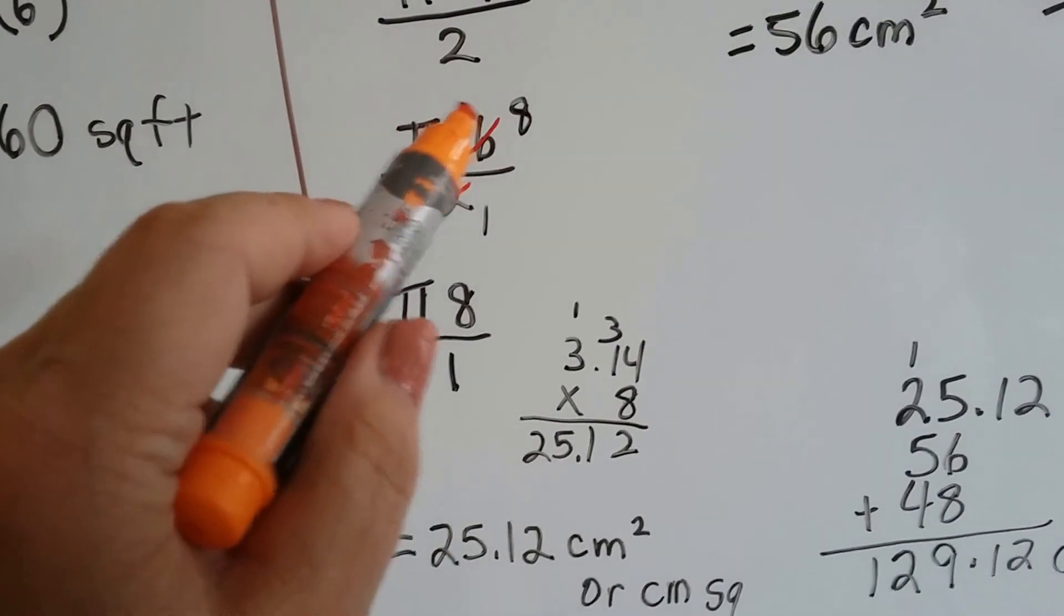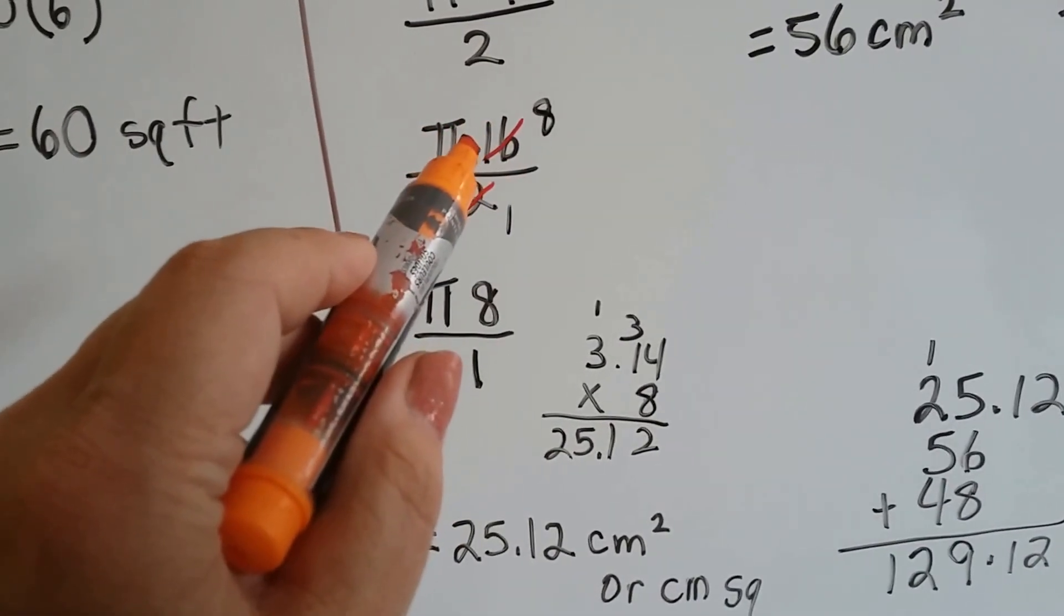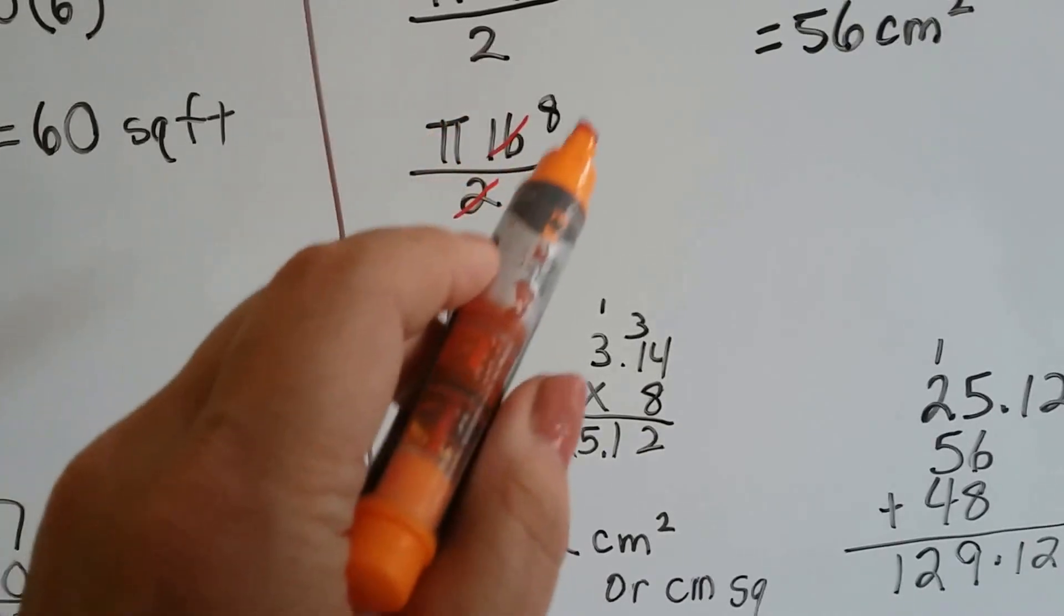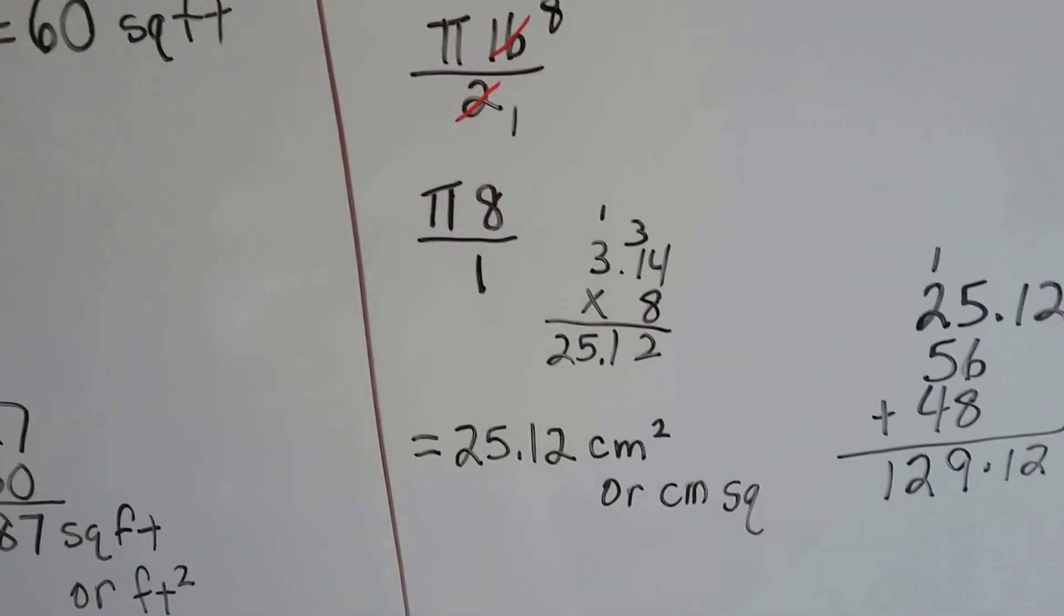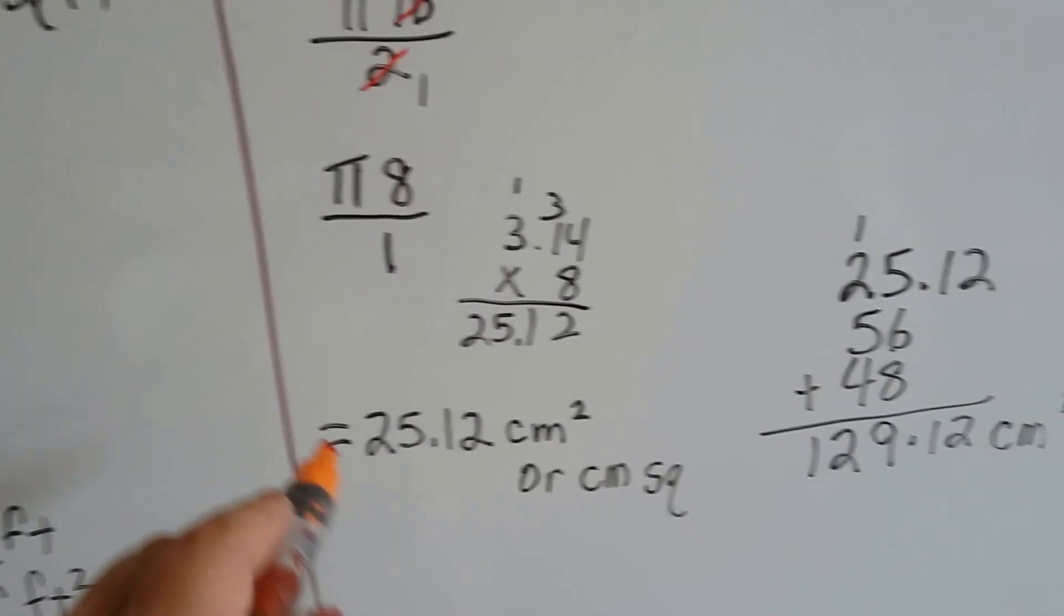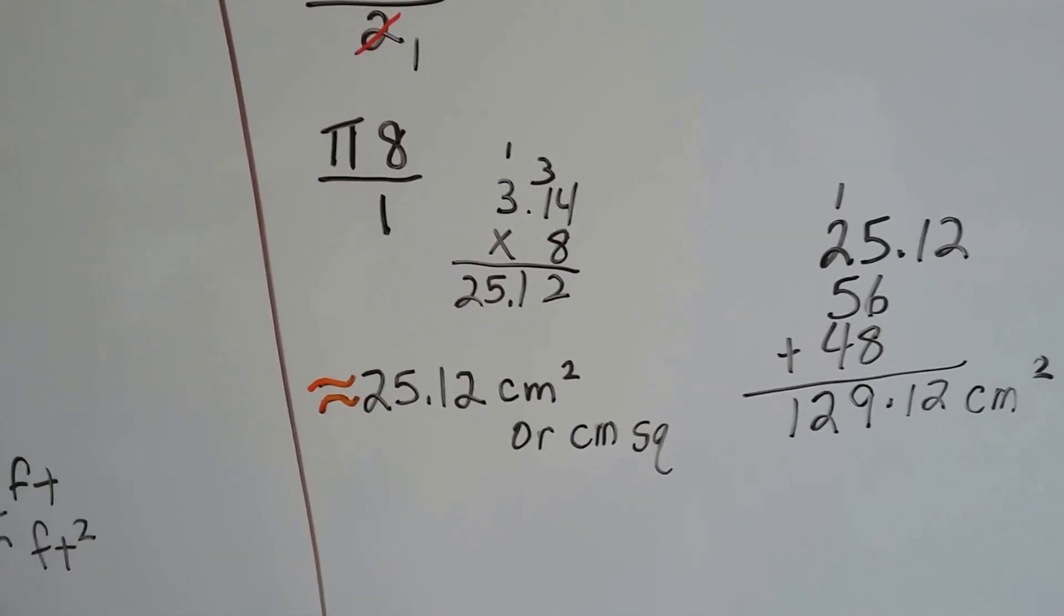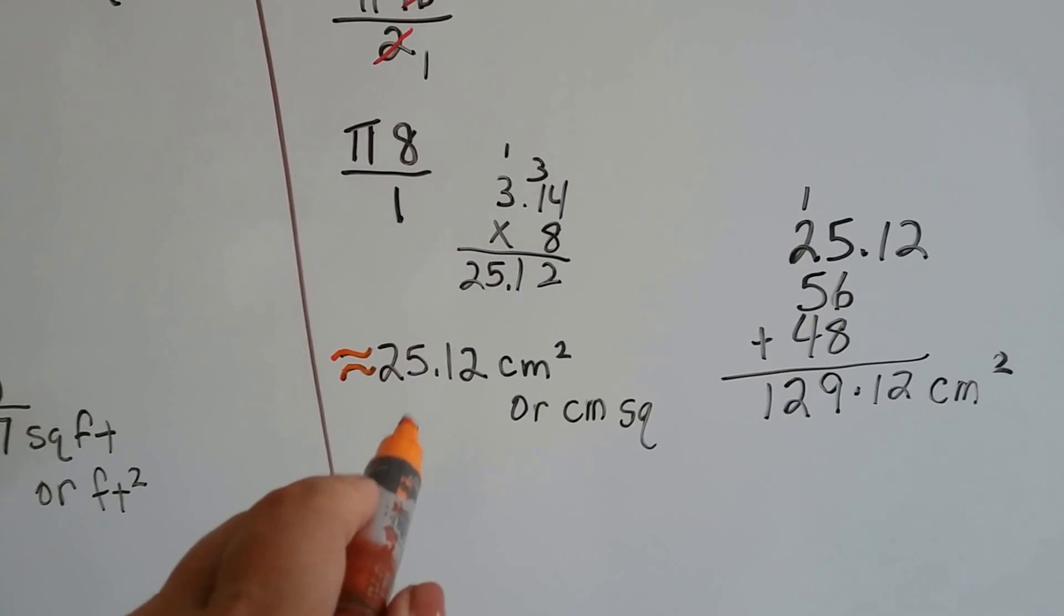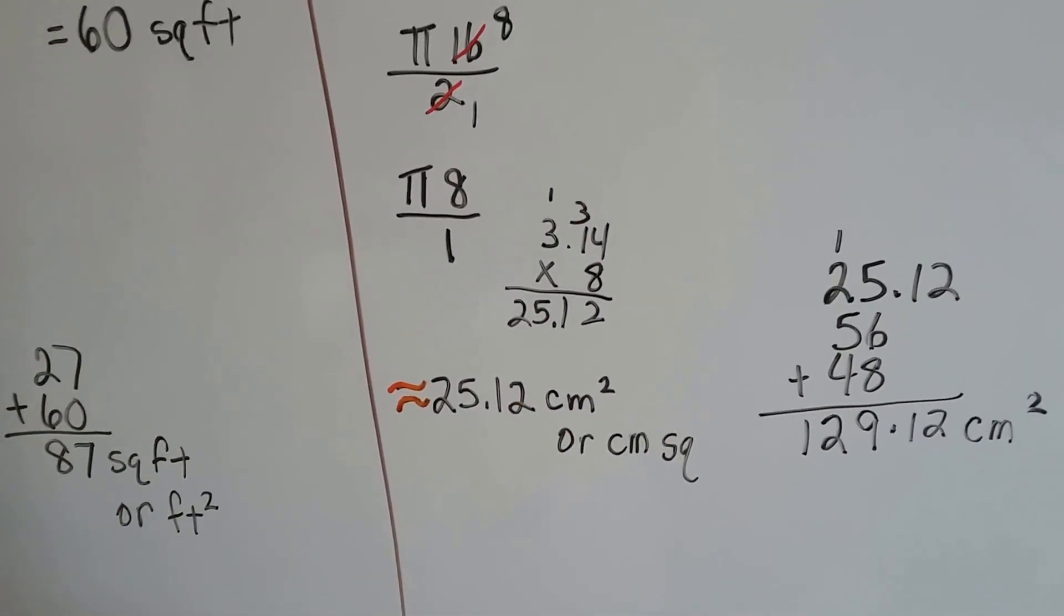3.14 times 8 is 25.12. Now, I could have done 3.14 times 16, but it would have been another digit to multiply, and it would have taken me a little longer. And by cross-canceling really quick, I was able to just do pi times 8 really quick. So, now we know it's approximately 25.12. Because we used pi, we've got to use the approximate symbol. So, it's approximately 25.12 centimeters squared.